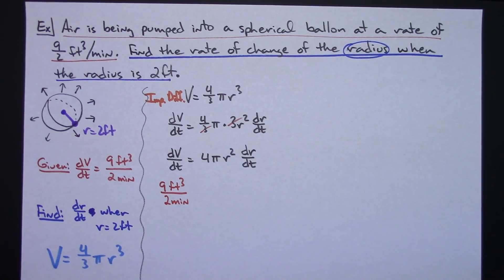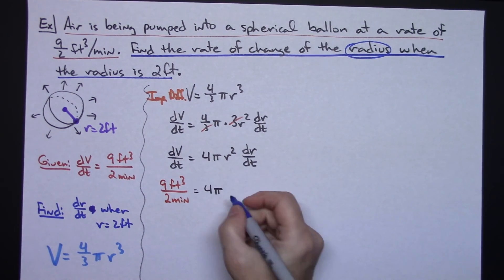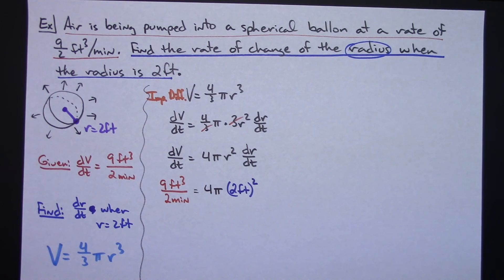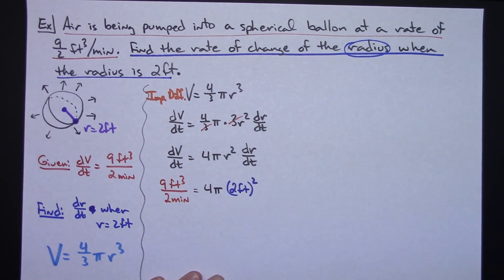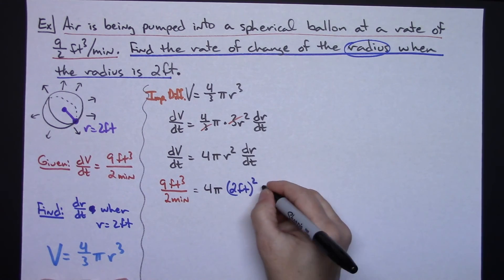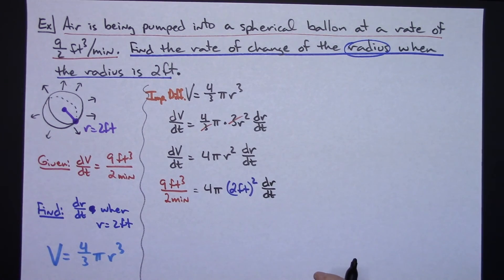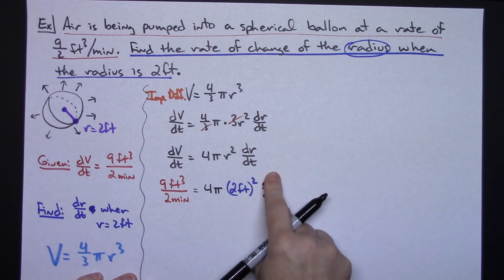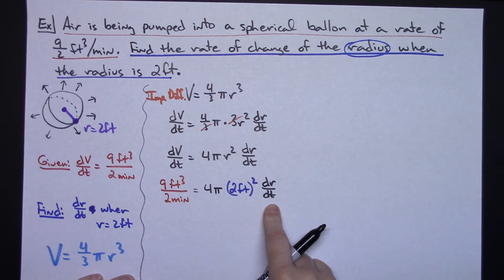And then equals 4π. Now my radius is at 2 feet, so I'm going to go 2 feet, 2 feet squared. You want to make sure and put that label in there so that we can have our label right when we get all the way at the end. And then the dr/dt. That's the only thing left. It's the only thing I need to solve for. So it's a matter of now being able to solve this equation for dr/dt.